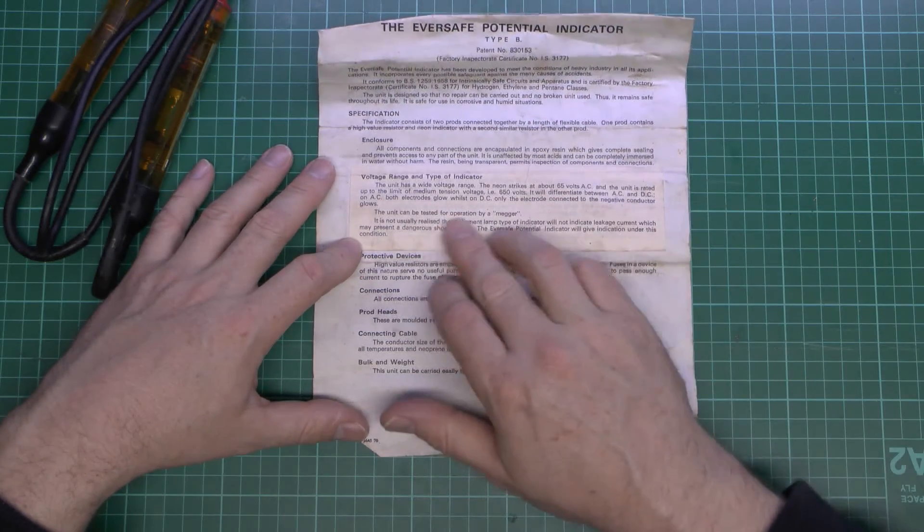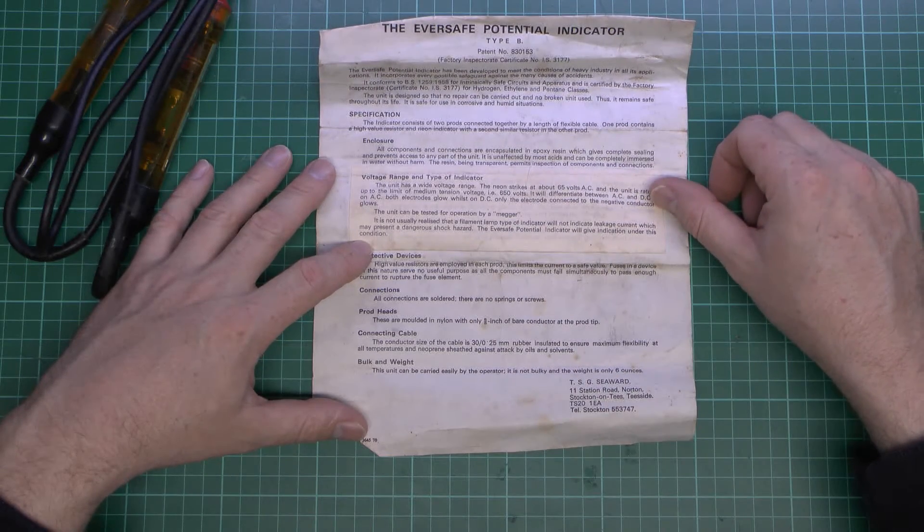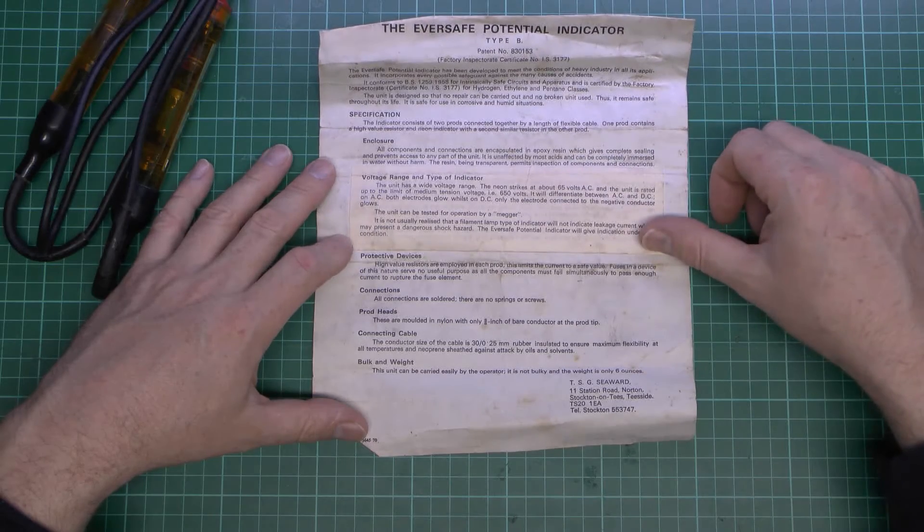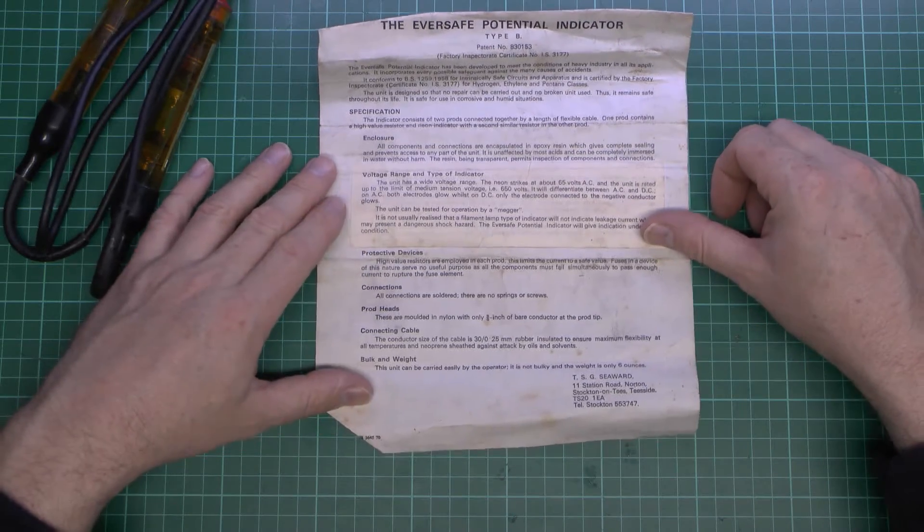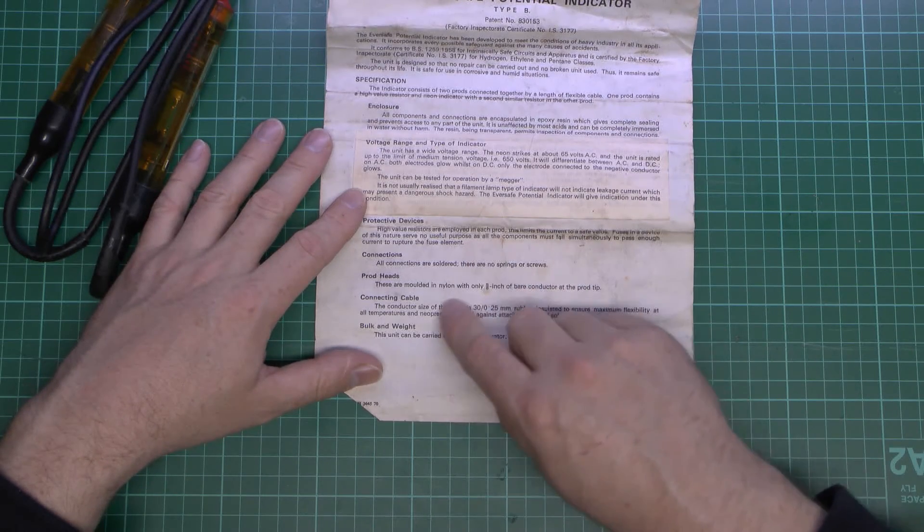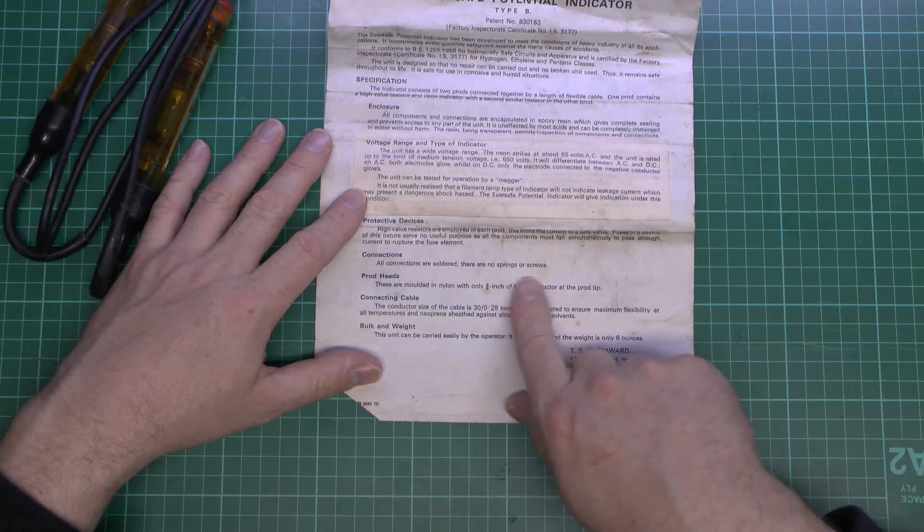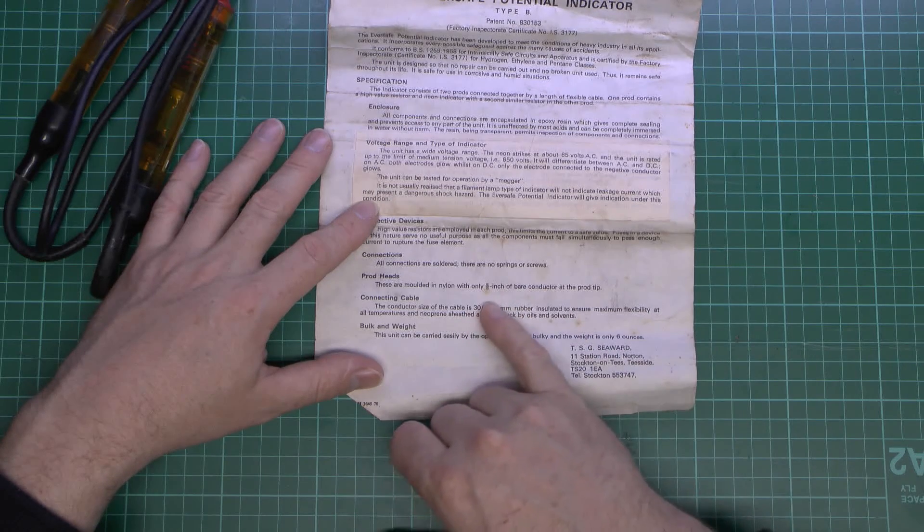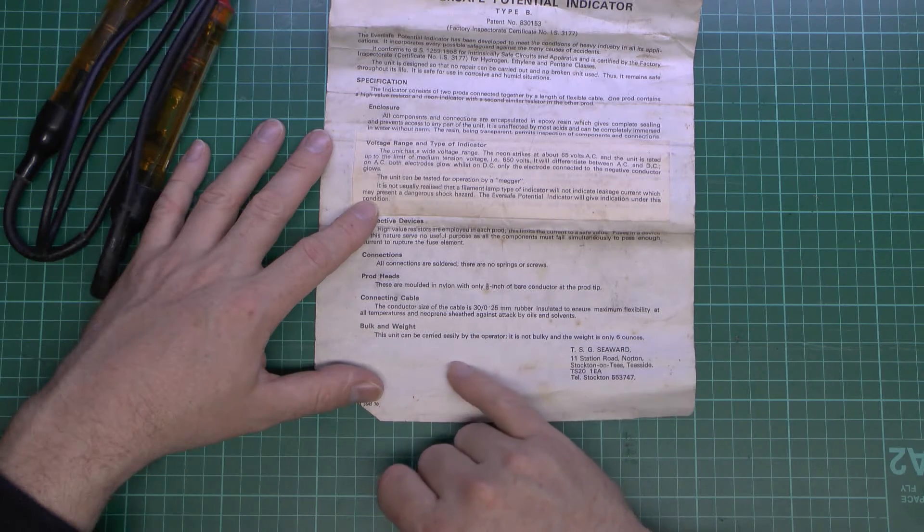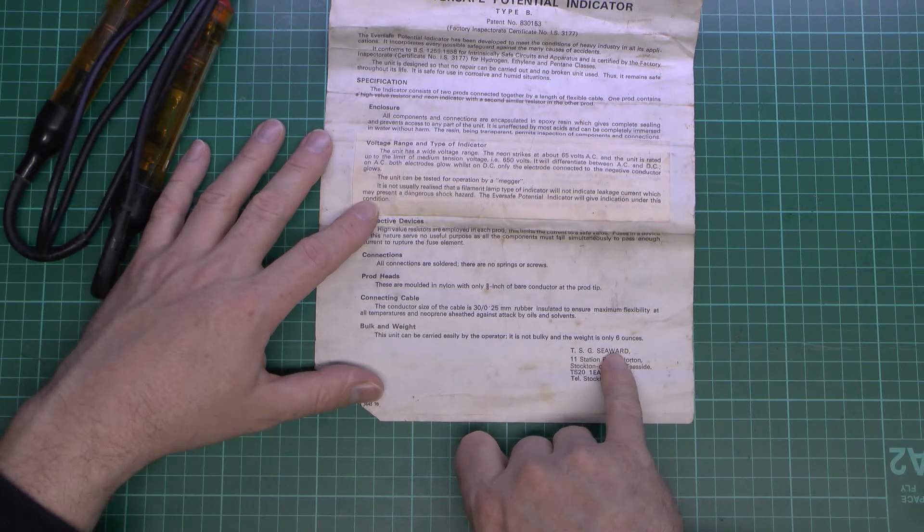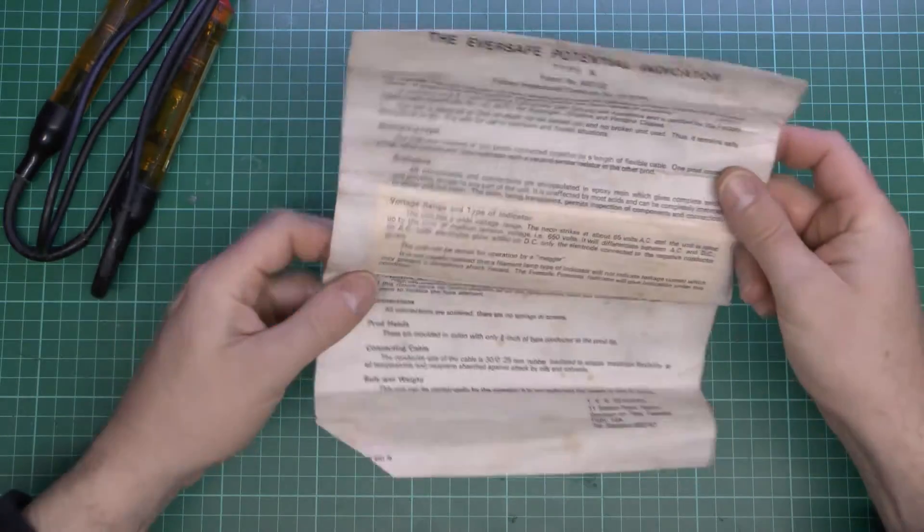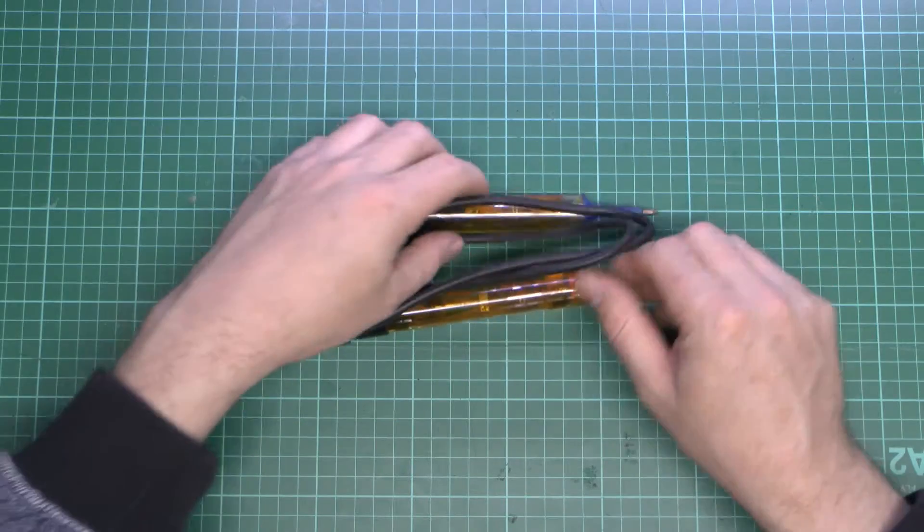You can test it for operation by megger, which is one of those things that puts out 500 volts to check the quality of insulation, and that's well within the range it's designed to detect. It has resistors in each prod. All the connections are soldered, no springs or screws, and the ends have only 5/8 of an inch of bare conductor, rubber cable, and it only weighs 6 ounces. Let's have a look at the item itself.